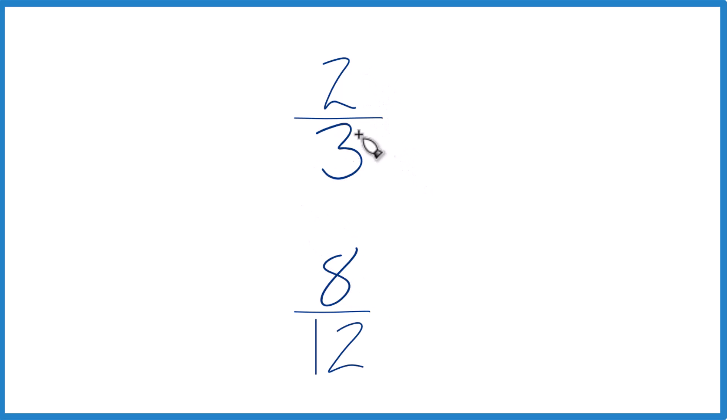Or you could find a common denominator. Right now we have three and twelve, but if we could find a number that both of these go into evenly, we could just compare the numerators. So let's do that.